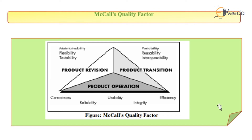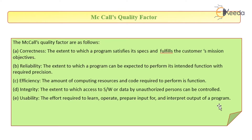In the diagram you can see there is a triangle divided into three segments: product revision, product operation, and product transition. Each of these sub-triangles further has two parameters. Now let us look into each of the parameters. The McCall's quality factors are as follows. Correctness: it checks the extent to which a program satisfies its specification and fulfills the customer's mission and objectives.